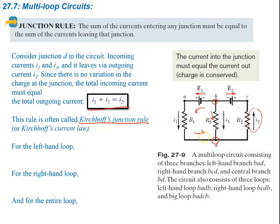If we wanted to write an equation to find the current or the EMF, we follow the rules we've used before. As we go around, if our current is going with the EMF, we get a positive EMF — epsilon 1. Then we run into resistor R1, going with the current, so that's negative: minus I1*R1. Then we get to the next resistor, but the current is in the opposite direction, so we add I3*R3. That equals zero, giving us one equation.